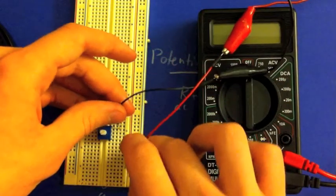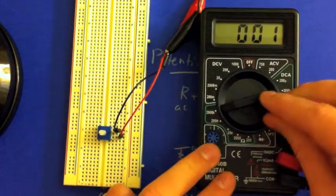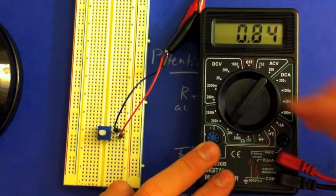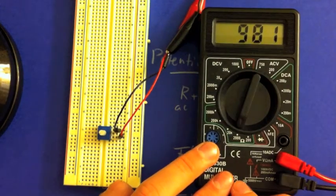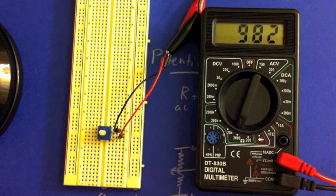So first, we're going to measure the resistance between A and B, which we know in the diagram is going to be the same no matter where the knob is turning, which in the case of this pot is about 980 ohms.